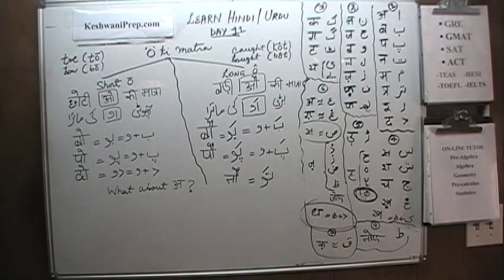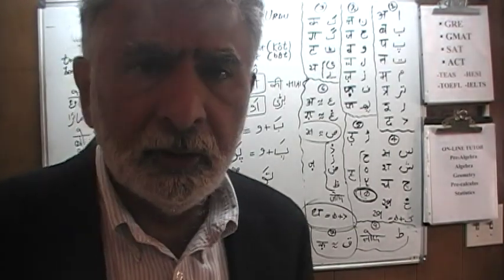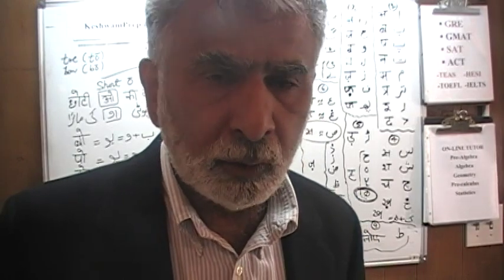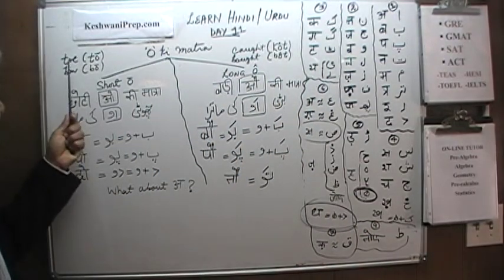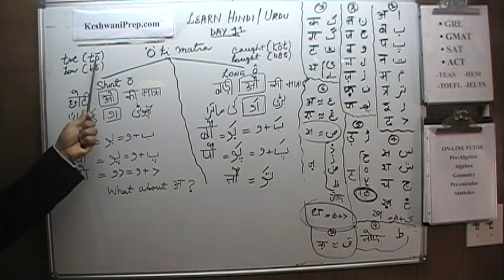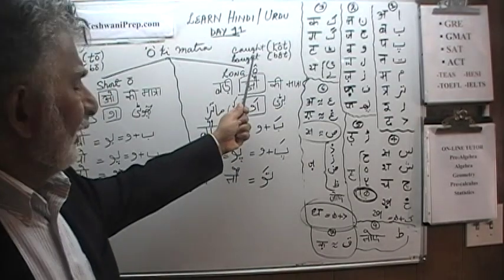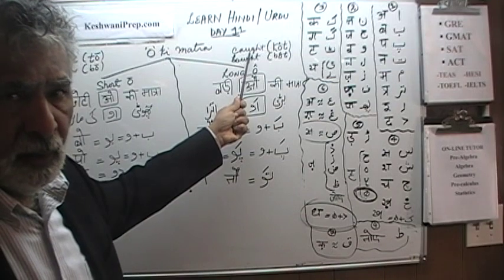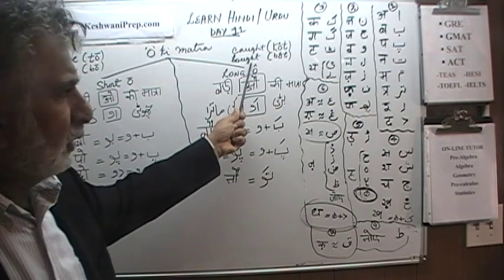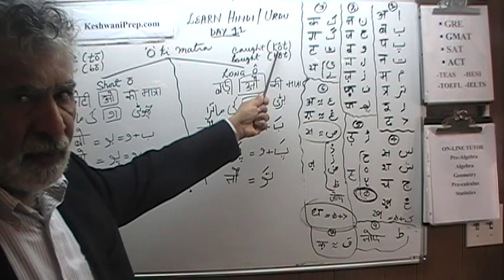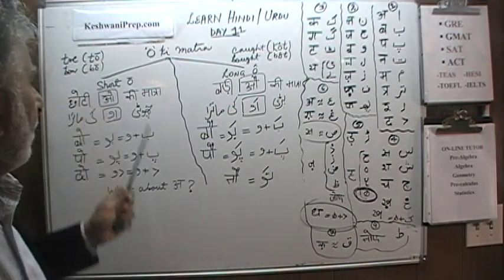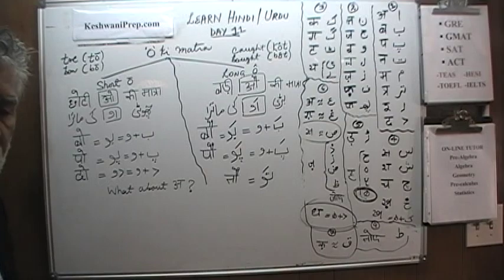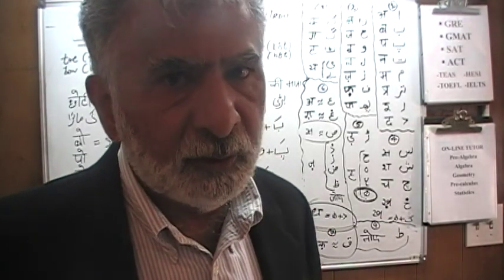In Oki Matra, just like Iki Matra, there are two sounds: the short one and the long one — the short O and the long O. The short O would be words like the English word 'toe' — very quick, very short. The long O corresponds to English words like 'caught' or 'bought,' where the O is much longer. In the phonetics of English, it's the O with the hat on it. That's exactly what's going on in Hindi and Urdu, except we have symbols, not letters, that represent these sounds.